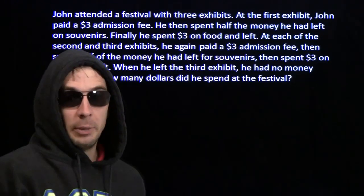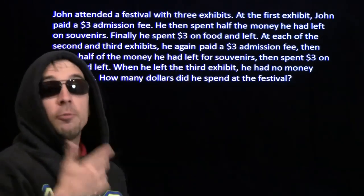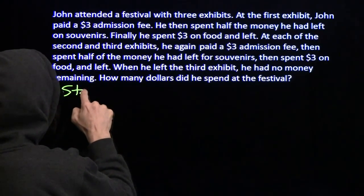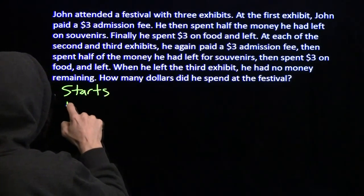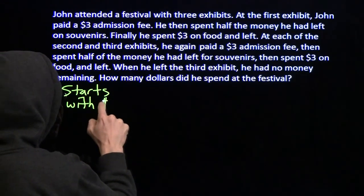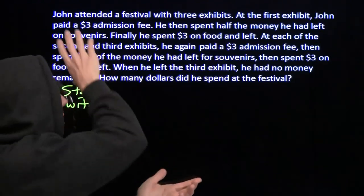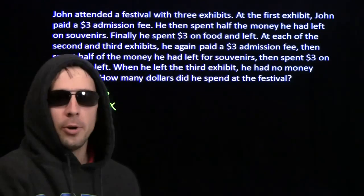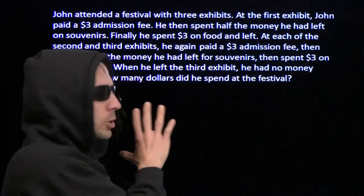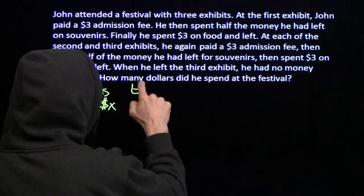We want to turn all these words into math because we don't want to look at all those words. So we're going to start off and assign a variable. We'll say that he starts with X dollars. Now we want to keep track of what happens to his bankroll as he's going through the whole festival. I don't want to look at all these words, so I'm going to build a table — it's going to help me follow everything a lot better.